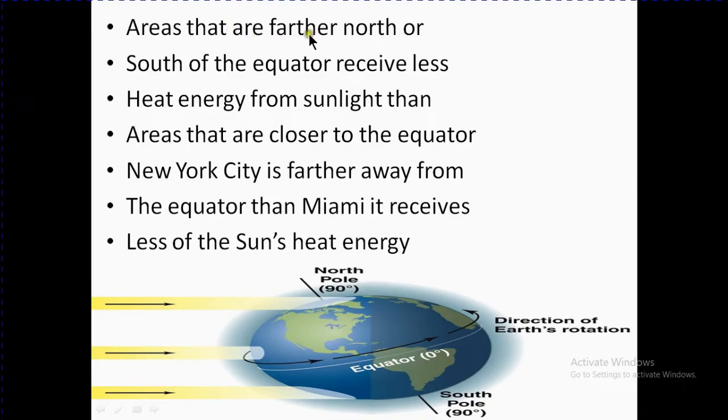Areas that are farther north or south of the equator receive less heat energy from sunlight. Areas that are closer to the equator, like New York City, which is farther away from the equator than Miami, receive less of the sun's heat energy.